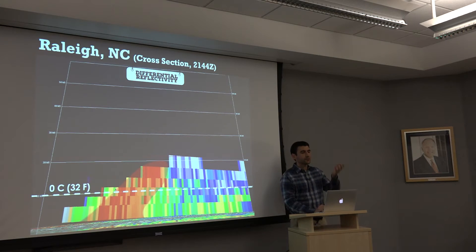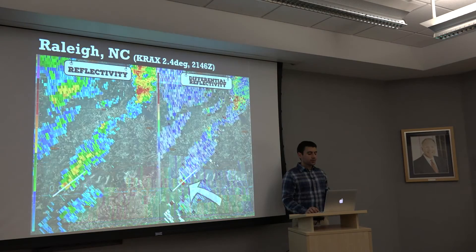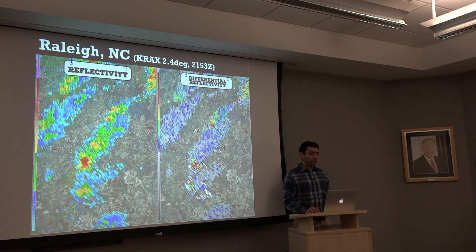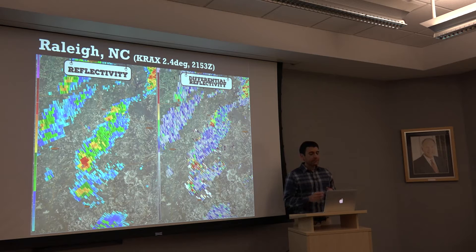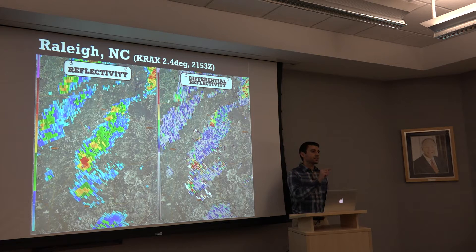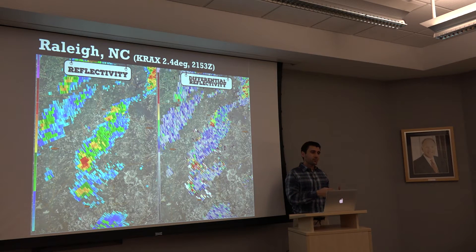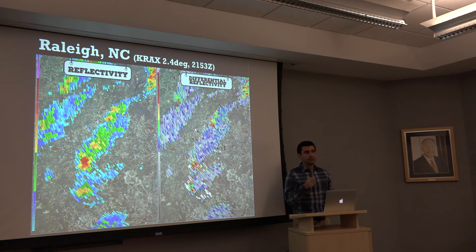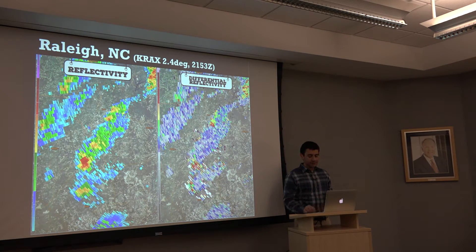Going back to reorient ourselves, then forward a few more minutes — you'll notice the storm has strengthened. If you can spot ZDR column signatures, you can identify which cell may develop more than another. If you see one with high ZDR to very high heights, and another cell with ZDR close to zero above the freezing level, you want to follow more closely the storm with that injection of high ZDR values above the freezing level. We notice our cell has developed nicely.